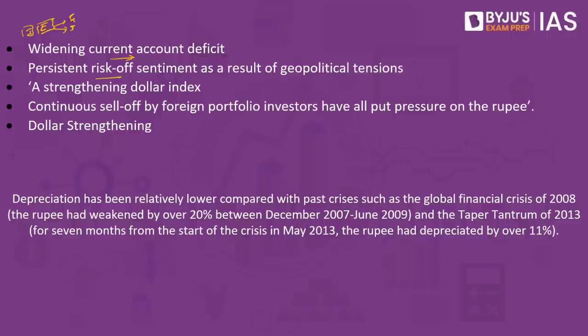The second reason is persistent risk-off sentiment as a result of geopolitical tensions. The concept here is 'risk-on' versus 'risk-off.' When everything is working according to investors' expectations and the macroeconomic credentials of a country are doing well, investors want to invest in that country — this is called risk-on. Whenever the risk is perceived as low, what we have is investors who want to invest in a country.